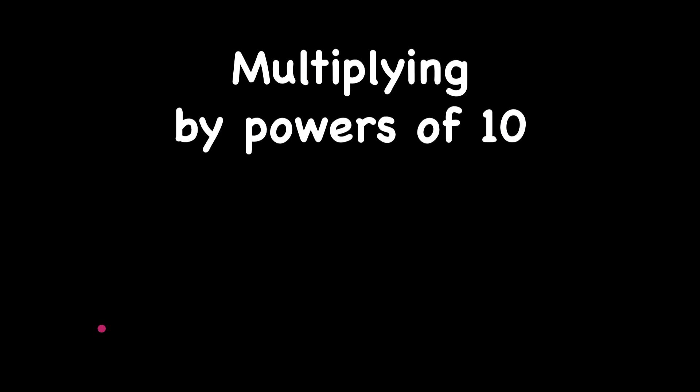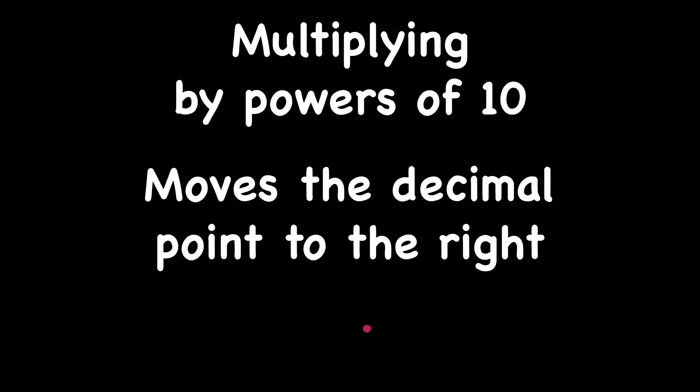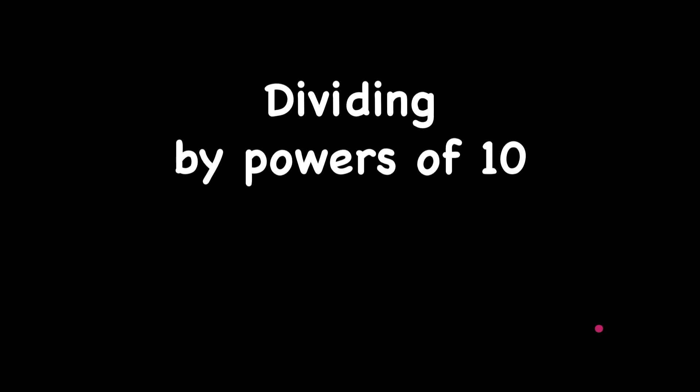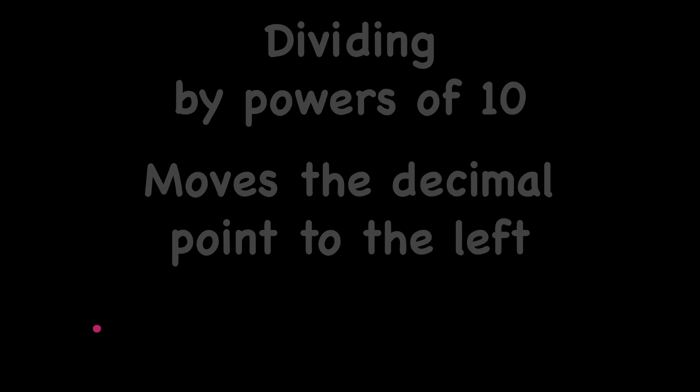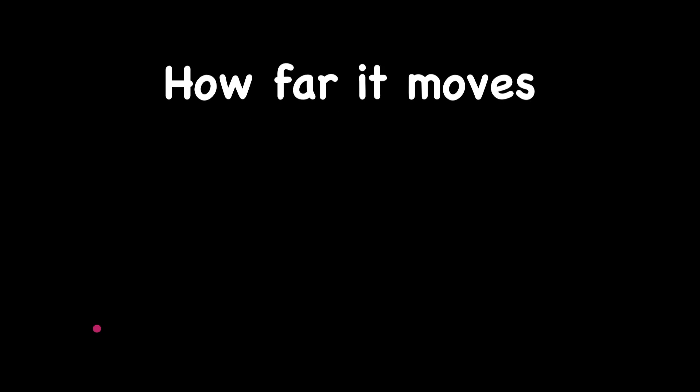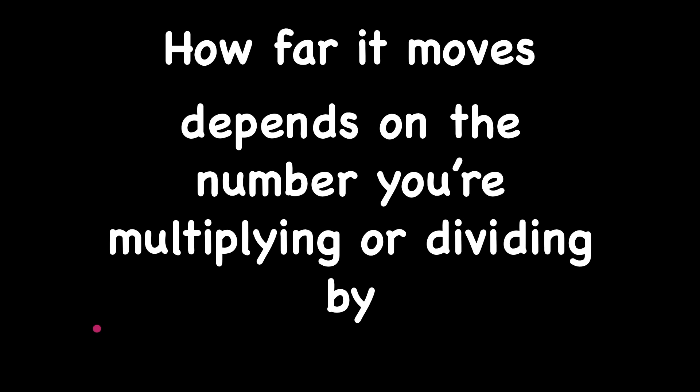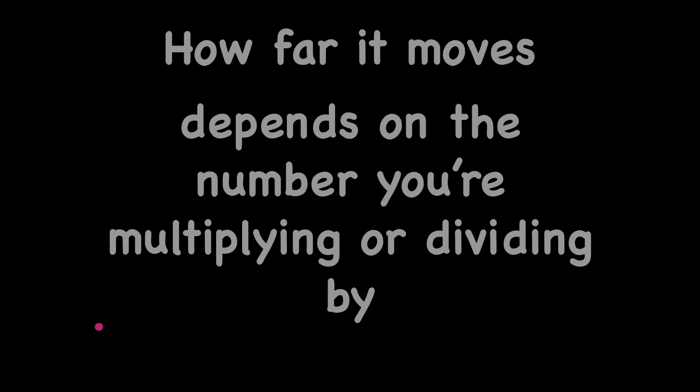Multiplying by a power of ten moves the decimal point to the right. Dividing by a power of ten moves the decimal point to the left. How far it moves depends on which power of ten you're multiplying or dividing by. If you're multiplying by ten, you'll move it one place. If you're multiplying by one hundred, you'll move it two places. If you're multiplying by one thousand, you'll move it three places.